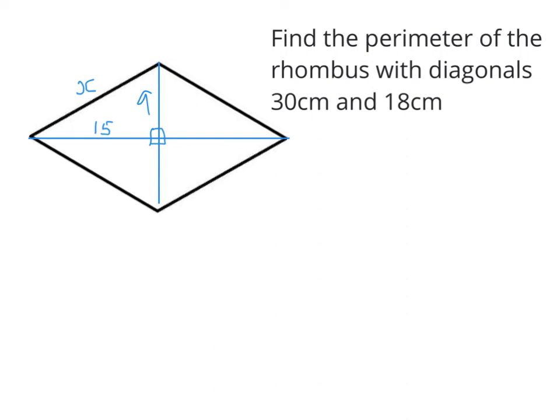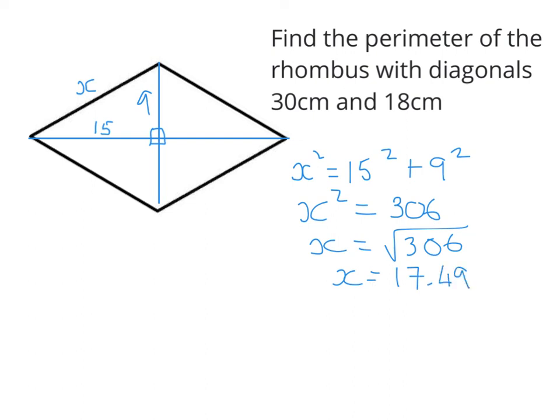So to get x, I'm literally going to use 15 squared and 9 squared. So x squared equals 15 squared plus 9 squared. And that gives us 306. And when we square root 306, we get 17.49 to two decimal places. Okay. So x is 17.49. So each side of the rhombus is 17.49. So the total perimeter is four of those. So four lots of 17.49. So you can either add up four times or just multiply it by four.